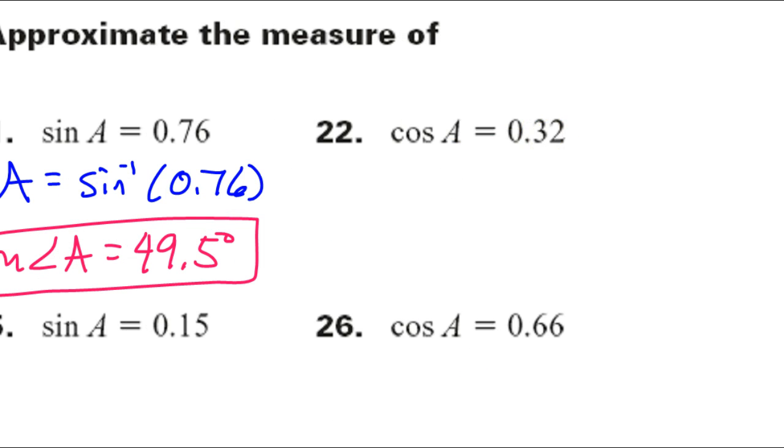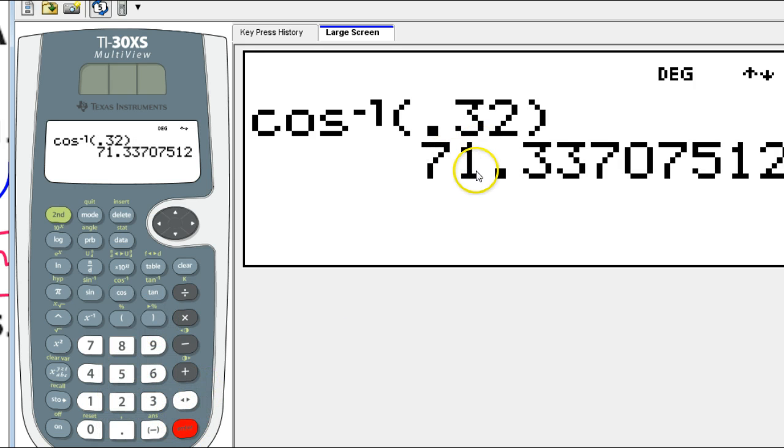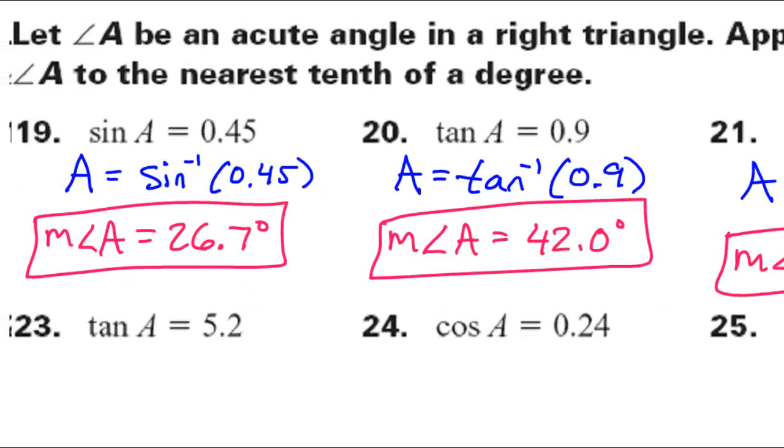All right, number 22. If you're given the cosine and you want to find the angle, you're going to have to use the inverse cosine. So the inverse cosine of 0.32. Okay, you can't skip this blue step, by the way. Do not just put it in your calculator and just write down the answer. All right, if you're missing the blue step, the setup, the inverse part, you're losing points.